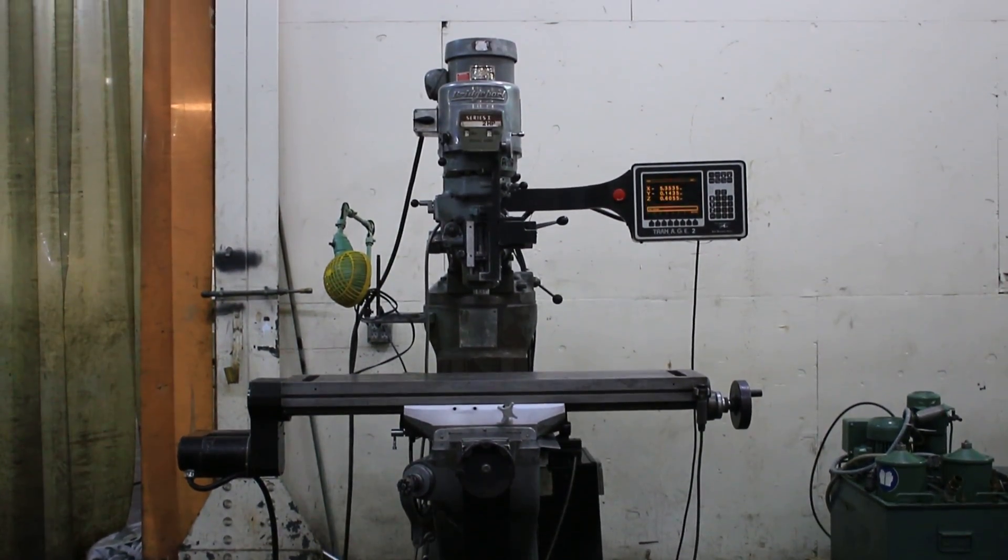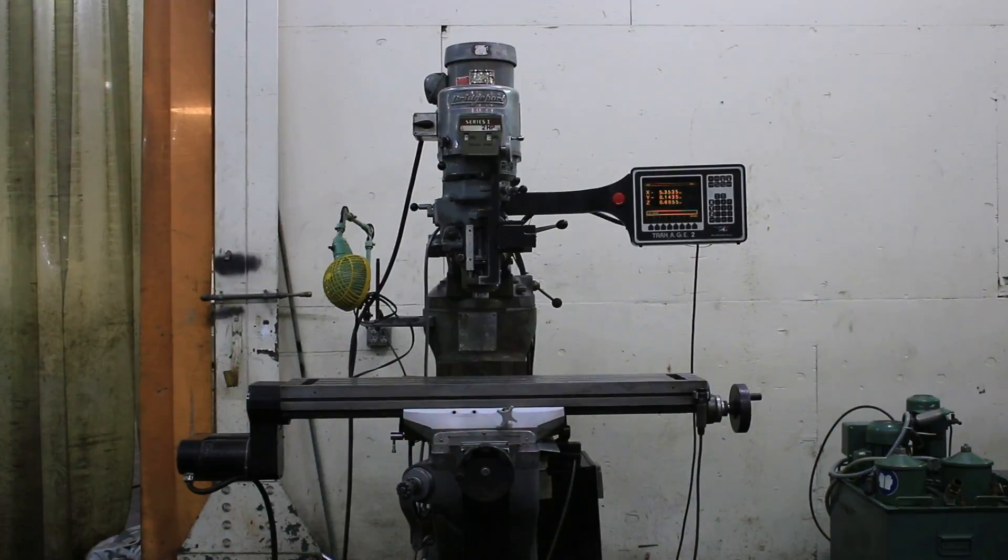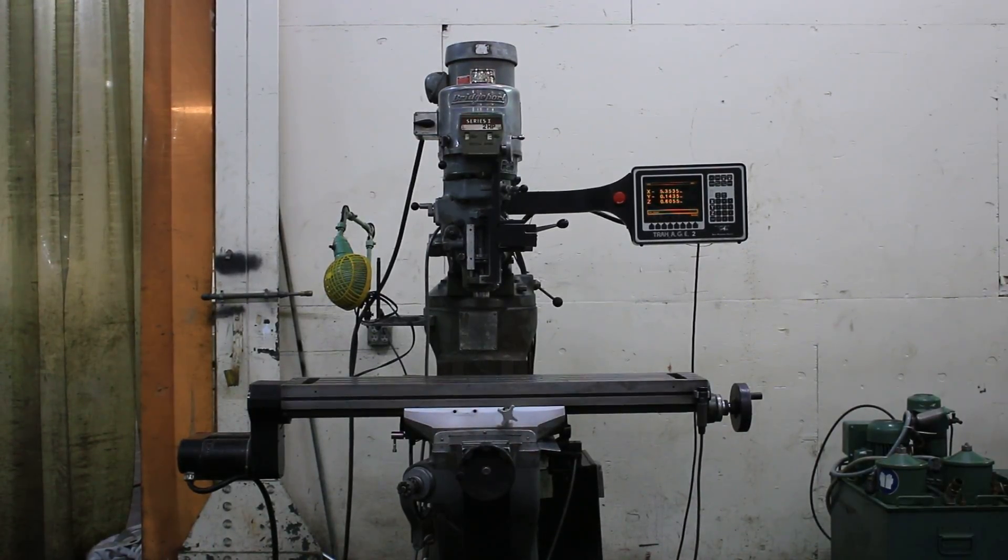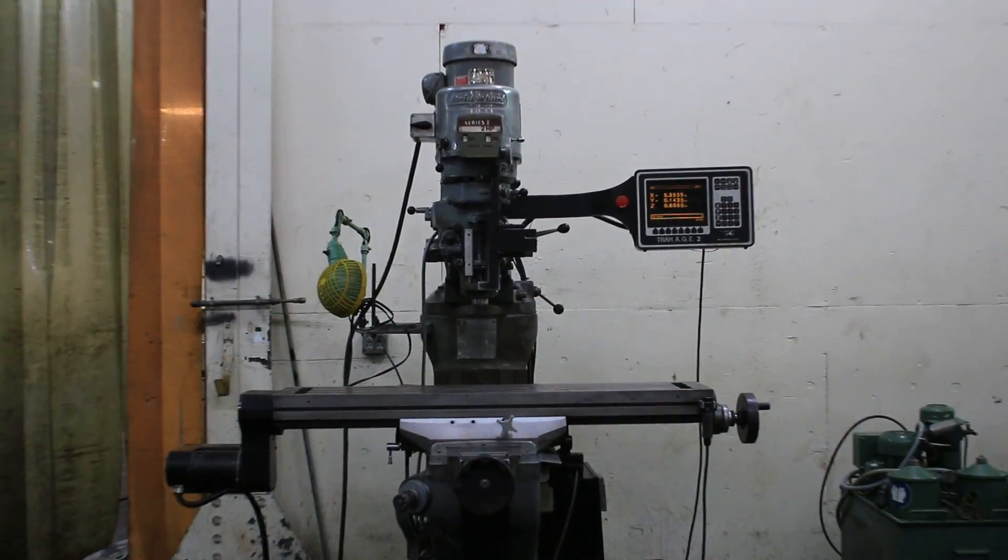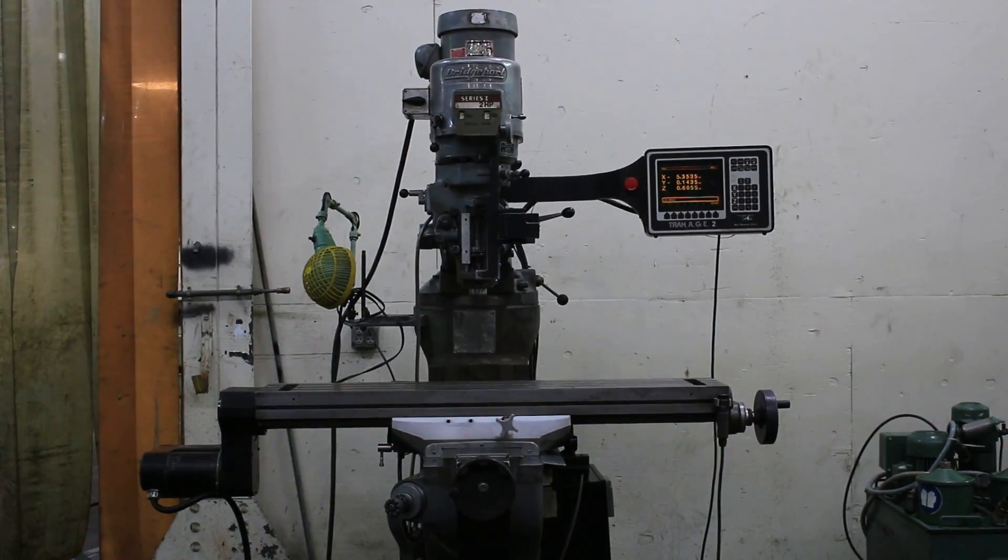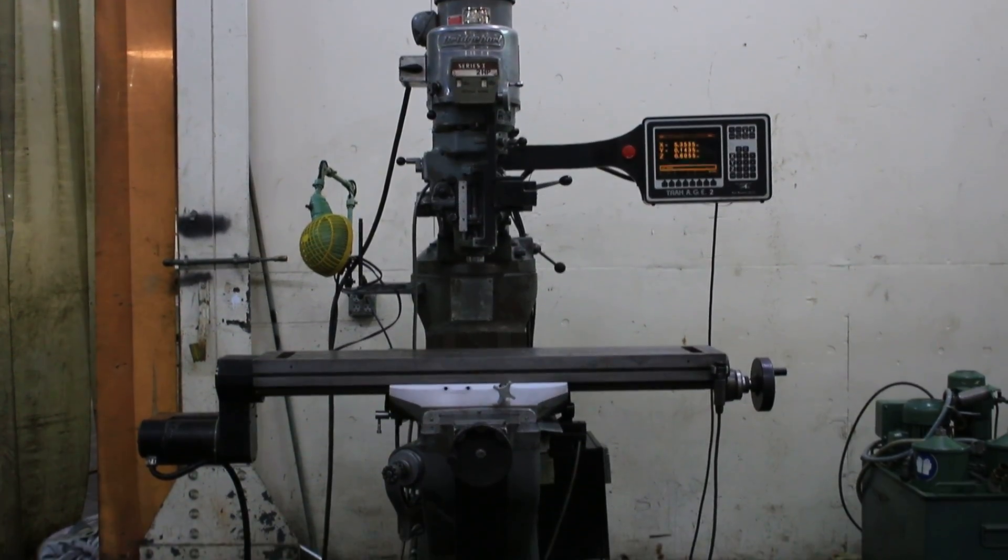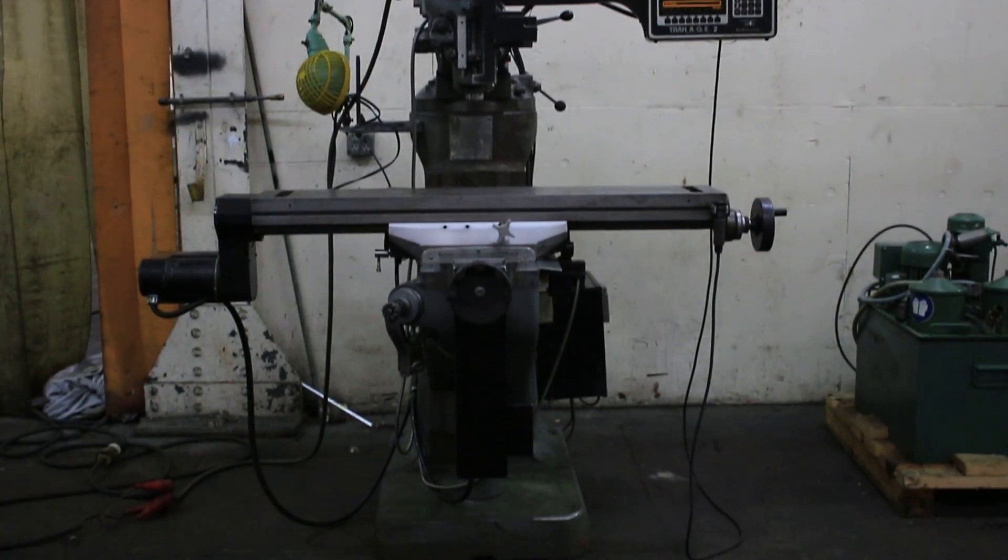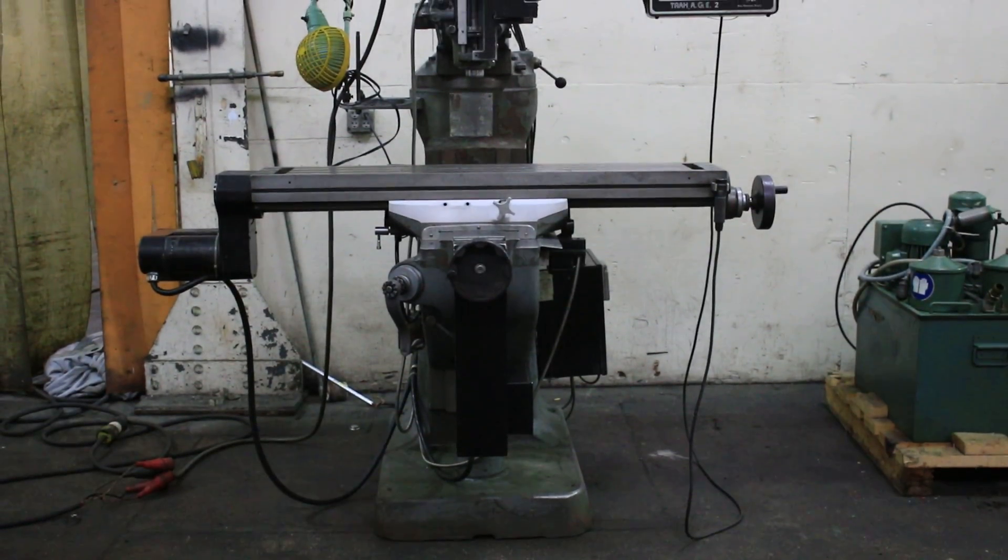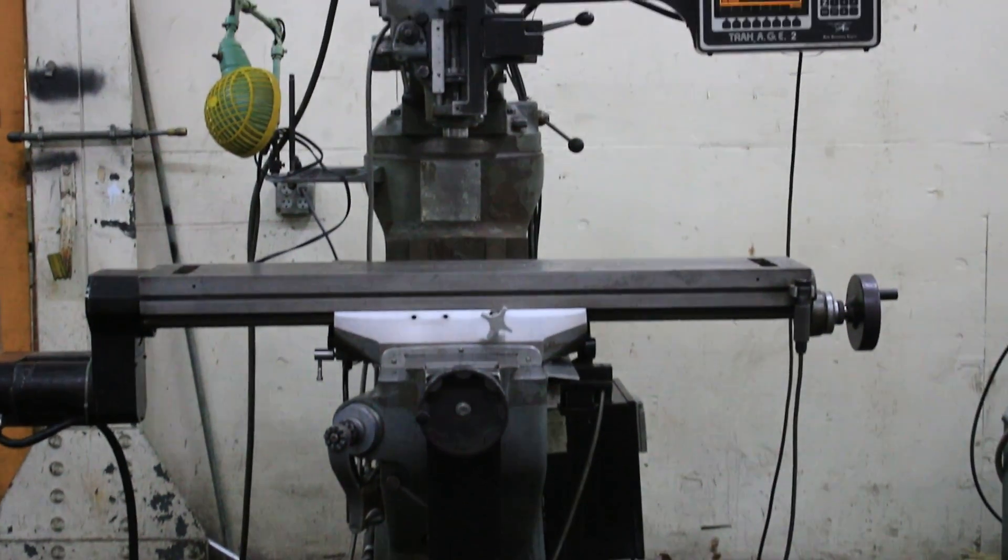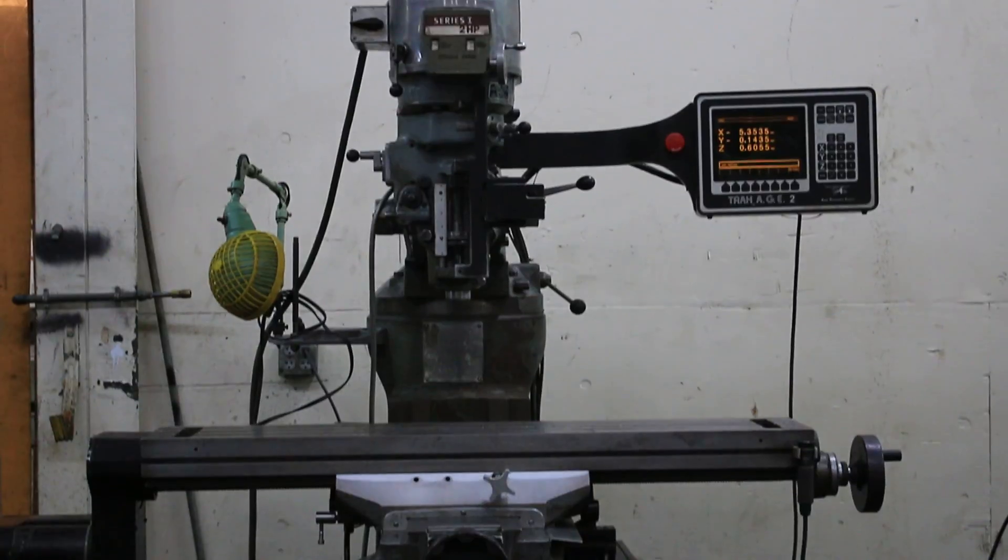We have a Bridgeport with a Prototrack 2-axis control, model AGE2, 9x48 table. It's a 2-axis control with a 3-axis DRO. It can be run either in manual as a 3-axis DRO as well. We're going to run it right now.